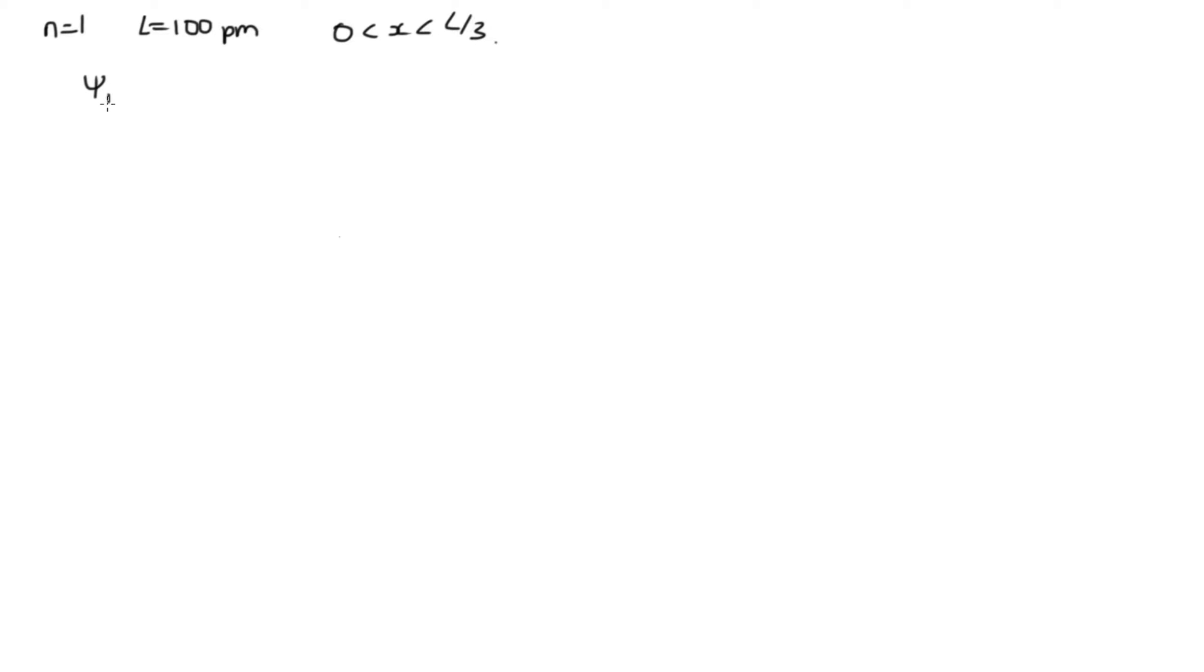So between x is equal to 0 and L over 3. We know that its wave function is given by the square root of 2 over L, this is our capital A, times sine. Now, it's n pi, so that's pi in this case because n is 1, times x over L.